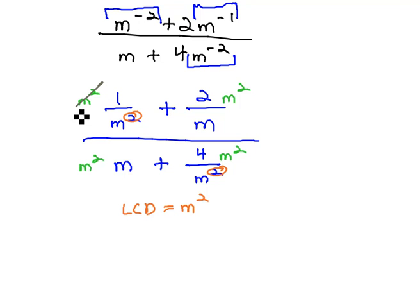In the first fraction, the m squares divide out completely, leaving just 1, plus m squared over m leaves behind the 2m, over m squared times m is m cubed, plus the m squared's divide out, leaving behind a 4.